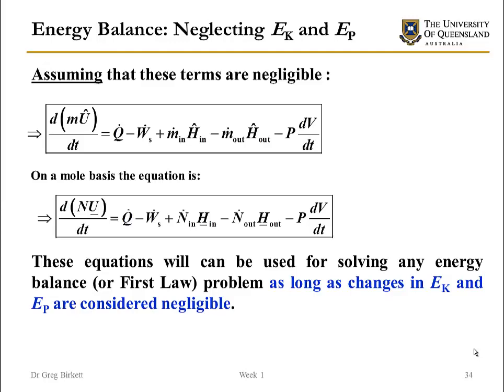Now an assumption that we're going to make a lot in this course is that the kinetic energy and the potential energy don't make important contributions. This is very close to being true for cases particularly where you've got reactions happening. The energy released in a reaction system tends to be far greater than the energy involved in the change of velocities of fluids and the change in the potential energy of fluids. Where that breaks down is if you have very high velocity flows. In those cases the velocities can be important and also in cases where you don't have a reaction happening. If you've got pressure changes across a valve and things like that, then sometimes the kinetic energy can be very important.